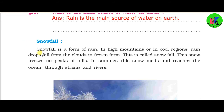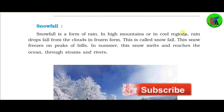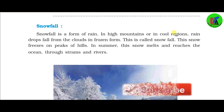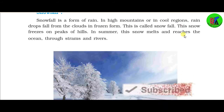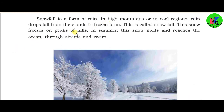Next is snowfall. Snowfall is a form of rain. In high mountains or in cool regions, rain drops fall from the clouds in frozen form. This is called snowfall. So the water droplets that come down frozen on the peaks of high mountains — that is snowfall.